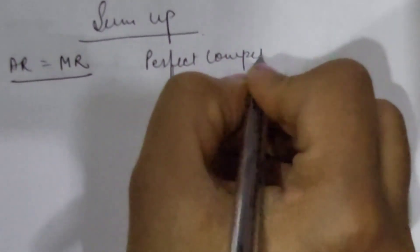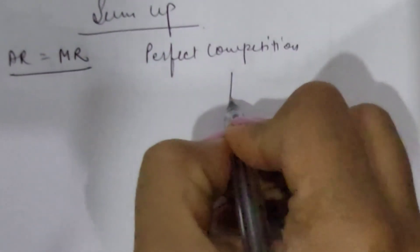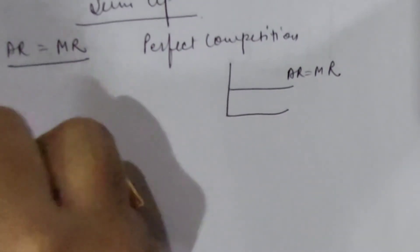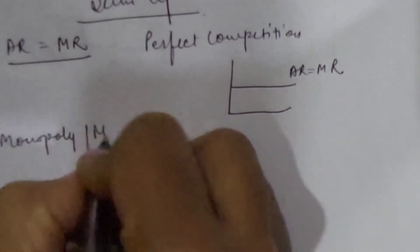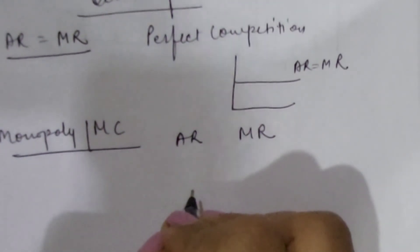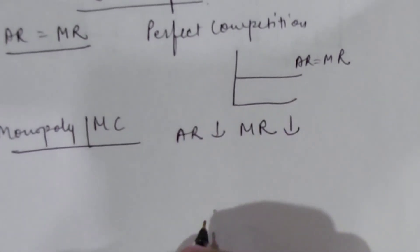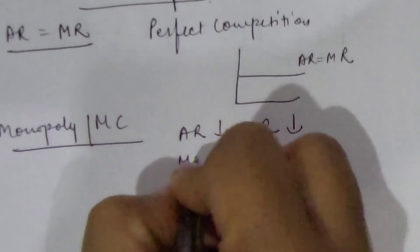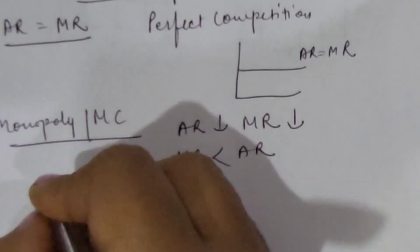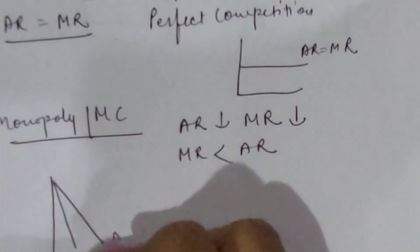To sum up: in perfect competition, average revenue and marginal revenue are equal and parallel to the x-axis. In monopoly and monopolistic competition, both average revenue and marginal revenue show a decreasing trend, with average revenue always greater than marginal revenue.